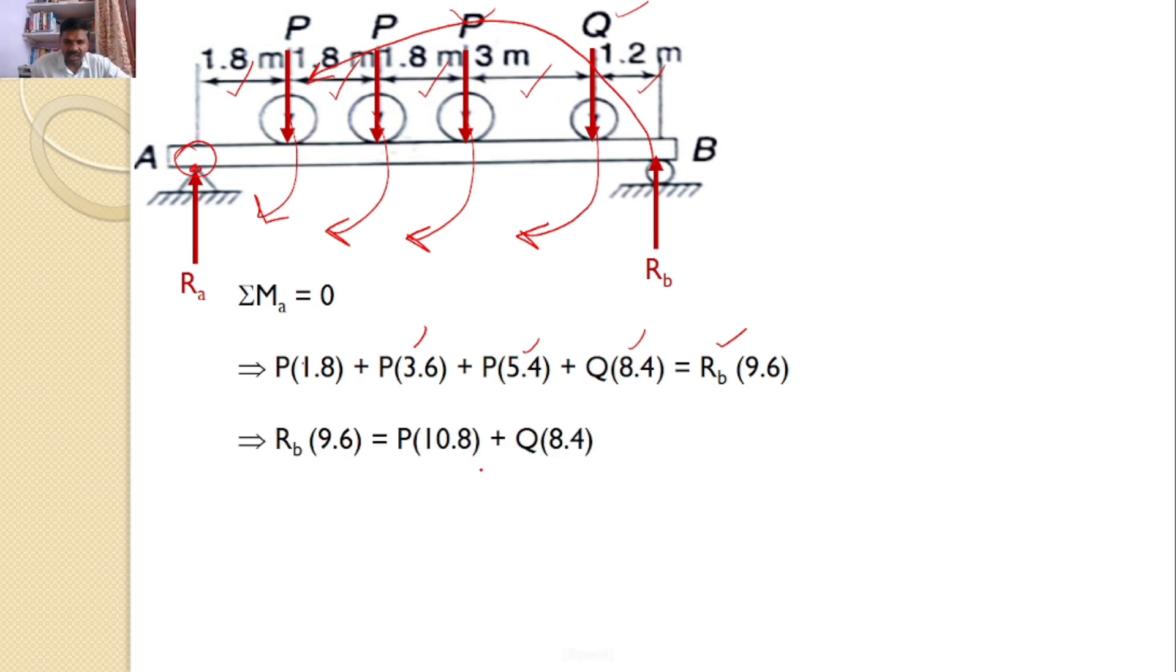Here, P and Q values are given, so I can substitute the P and Q values. Then I will get Rb times 9.6 equals 90 times 10.8 plus Q value 72 times 8.4. And upon simplification, I will get Rb equals 164.25 Newtons.